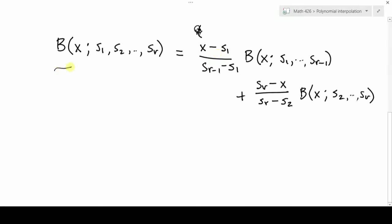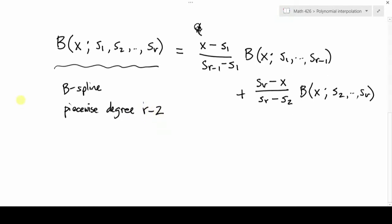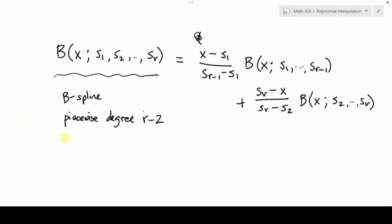So this function, this b-spline, it will be piecewise of degree, let's say it has to be degree two less than a number of points, so r minus two. Also, it's zero if x is to the left of the first knot, or if x is to the right of the last knot.